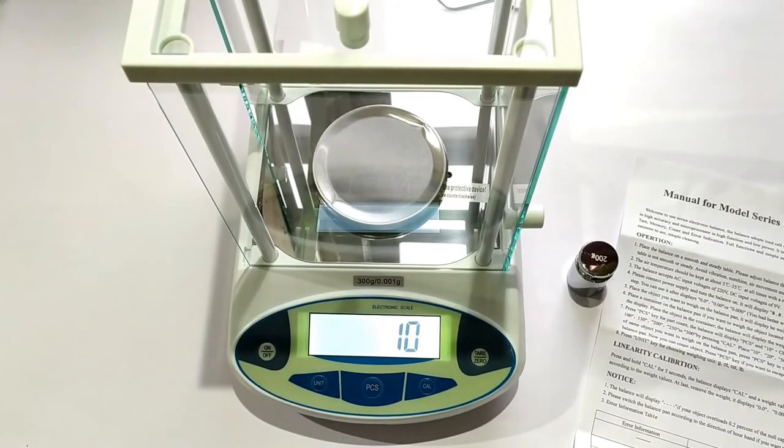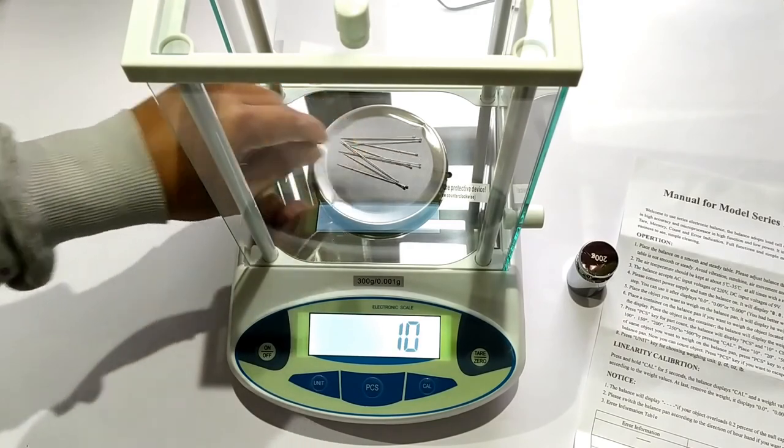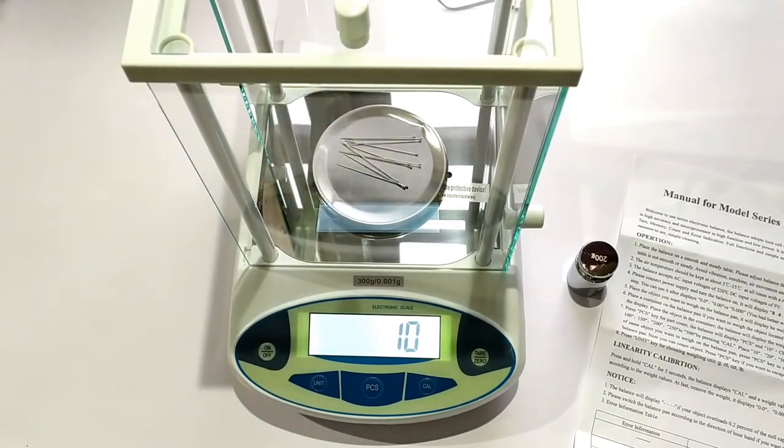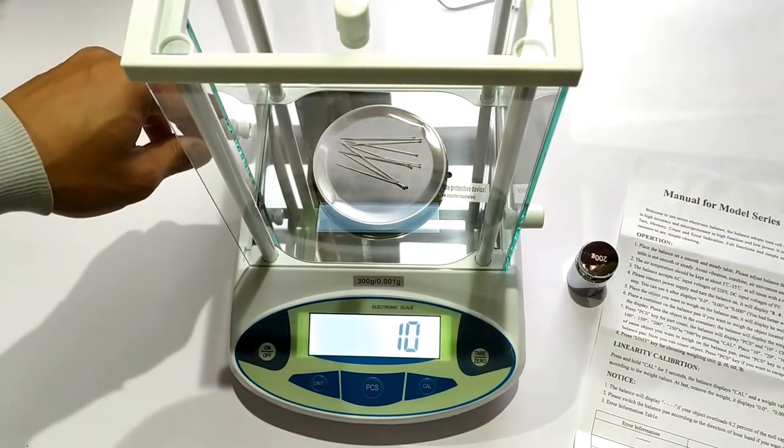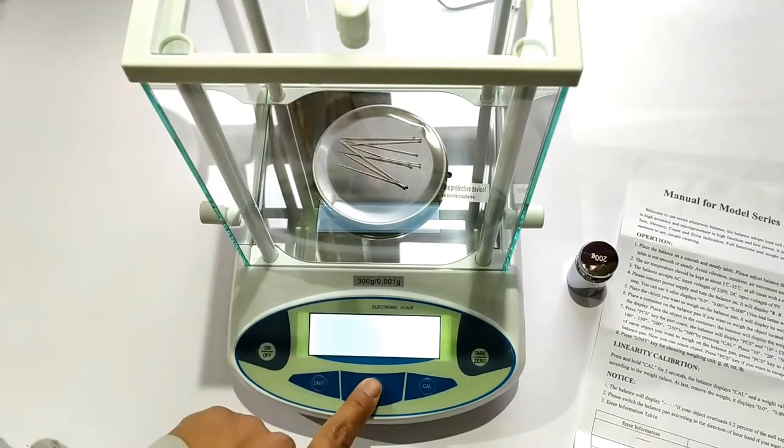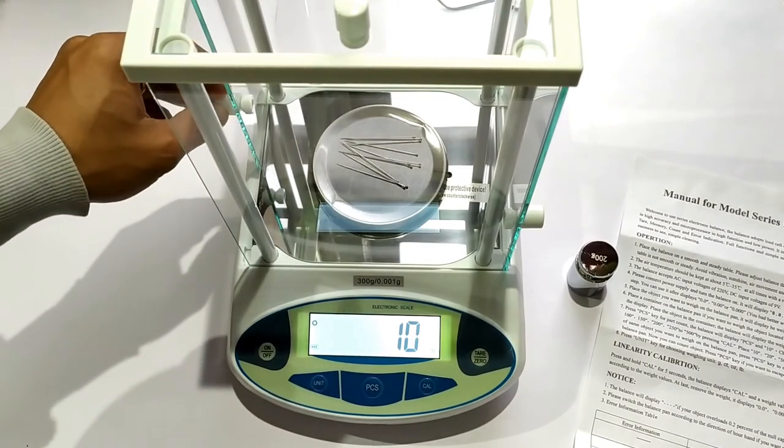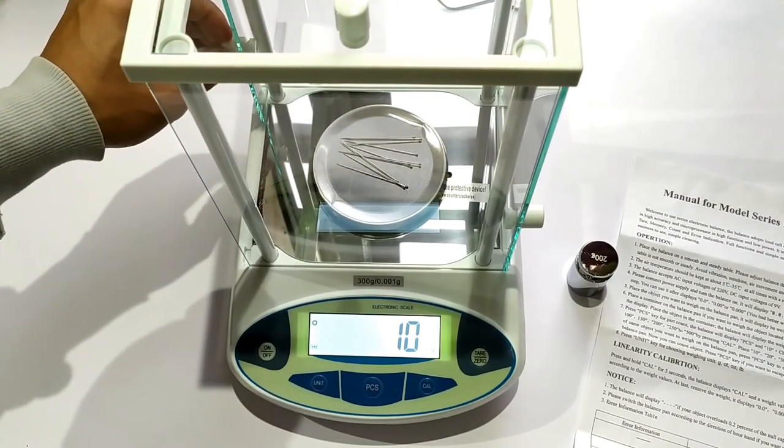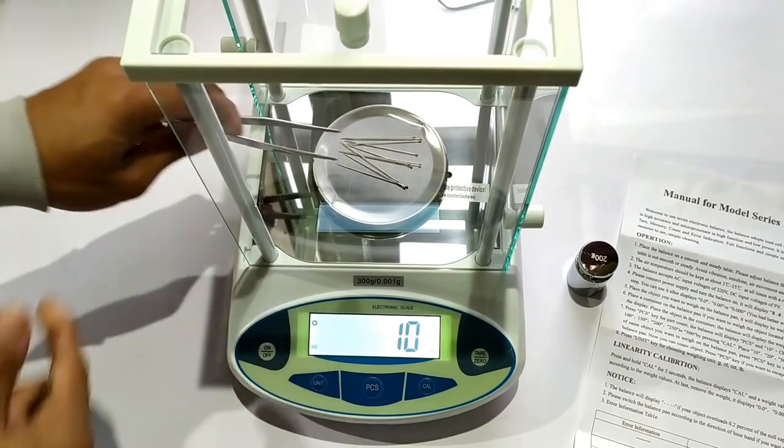Now we place exactly 10 counts of the item that we would want to count. We then close the weighing chamber and allow it to stabilize, and then press the PCS button again. Once the blinking stops, we carefully open the chamber, remove the items completely and then proceed with counting the same items according to our choice.